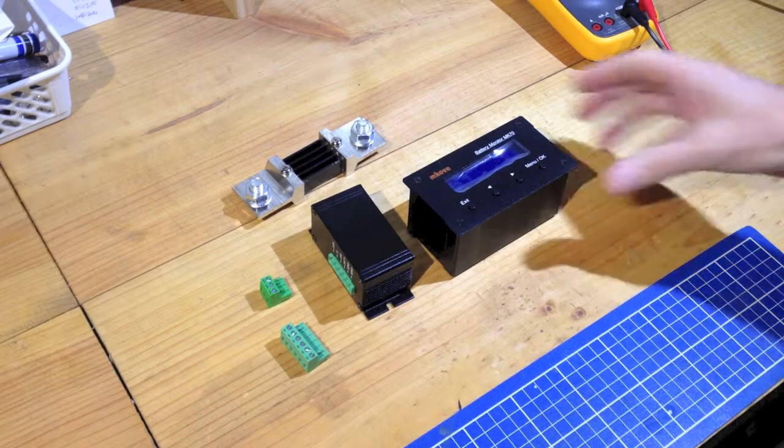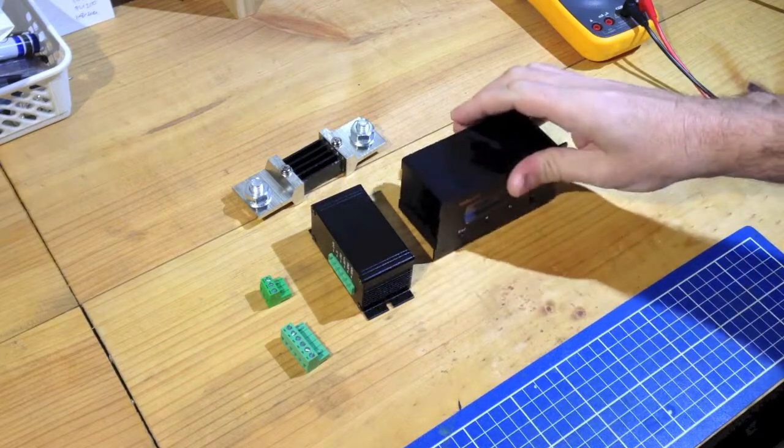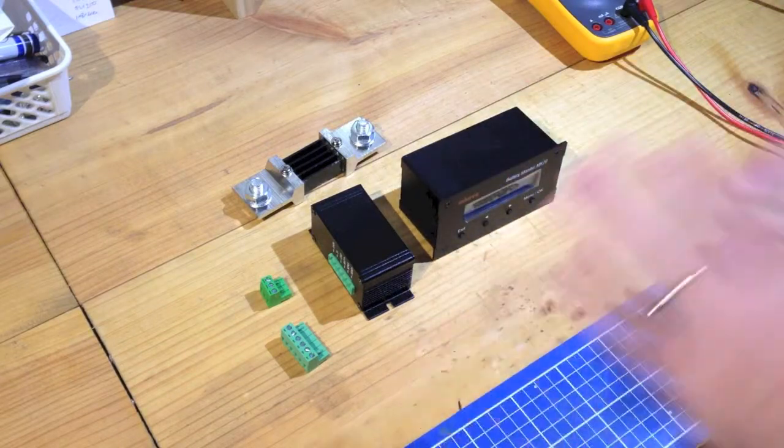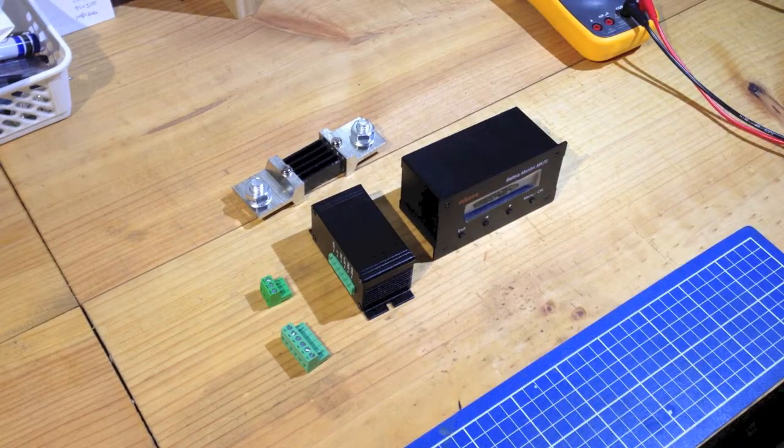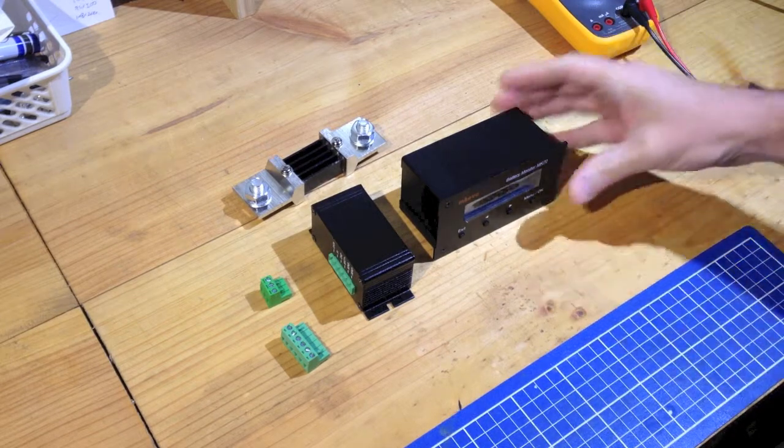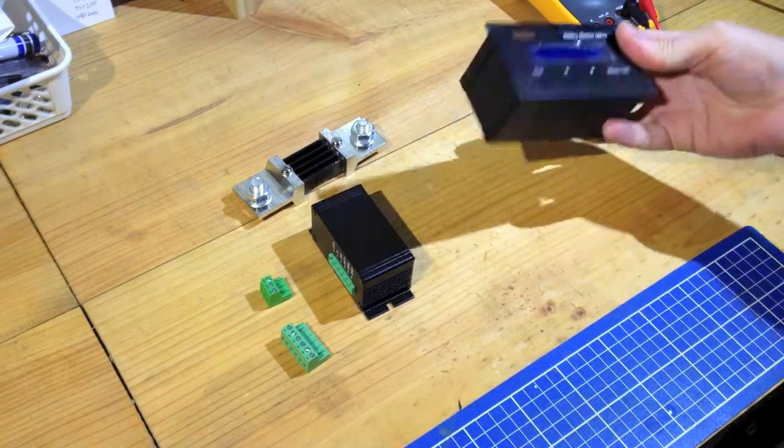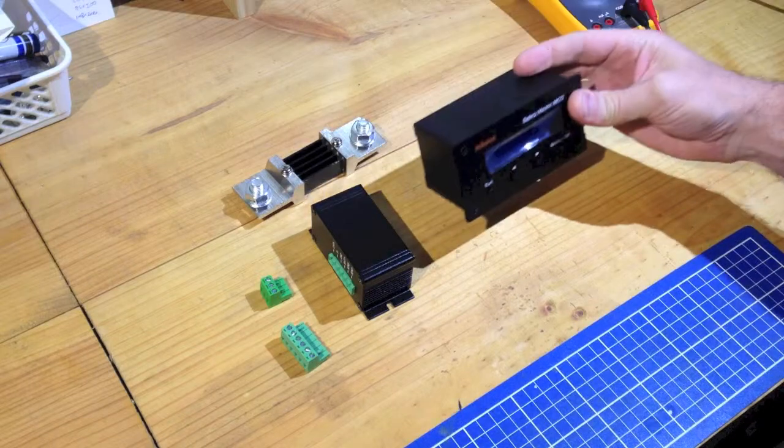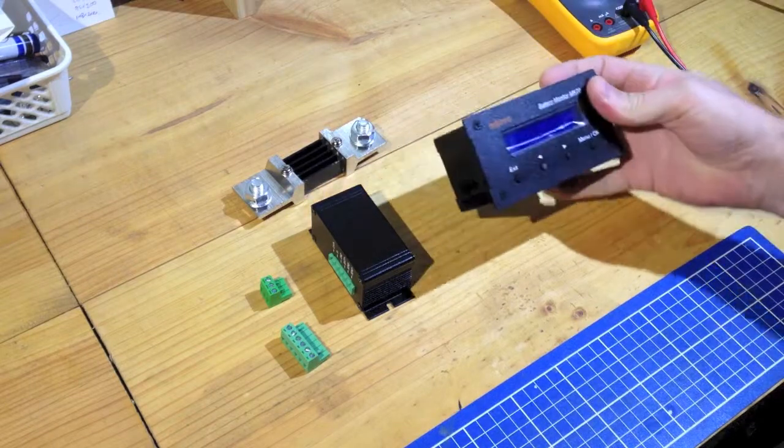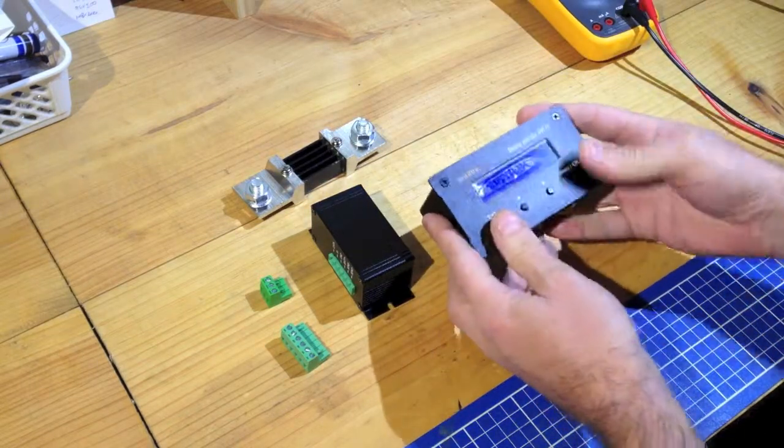So to start with, these are the items that come in the package. The package is a shipping box with foam protection all around. The units themselves are the main unit, which is the display unit that you install into your panel, and it has the various buttons that you can use to control it and operate it.